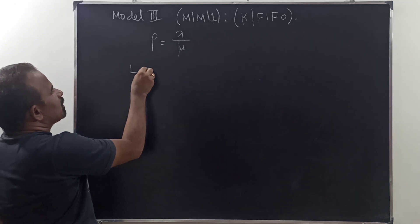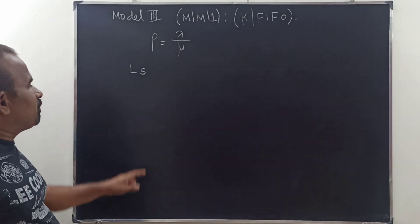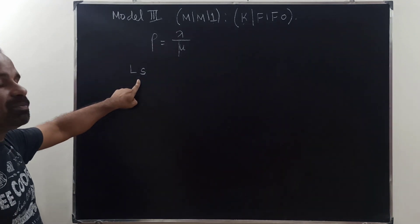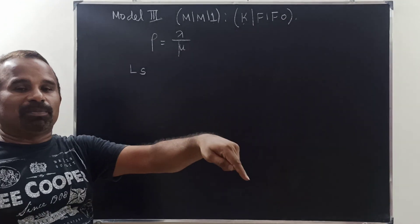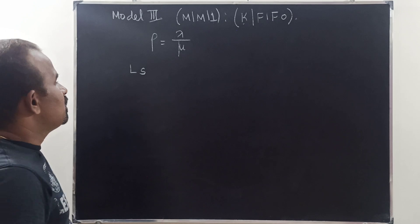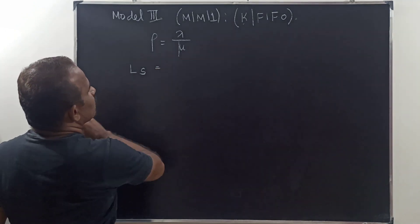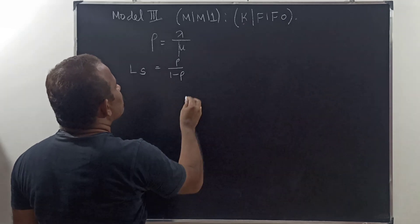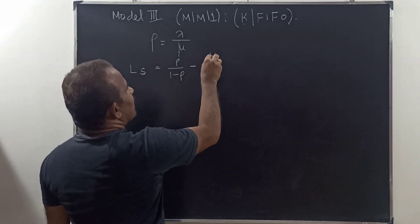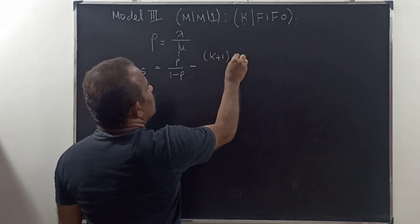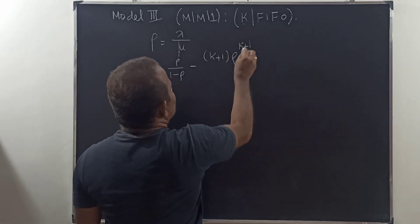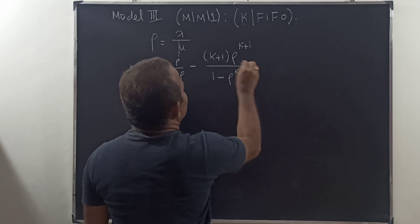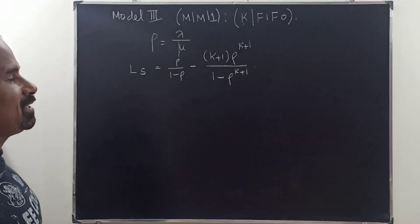Ls is the length of the system — the number of customers in the queue plus number of customers in the service. So Ls is equal to rho divided by (1 minus rho), minus (K+1) times rho power (K+1), divided by 1 minus rho power (K+1). This is Ls.